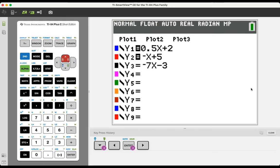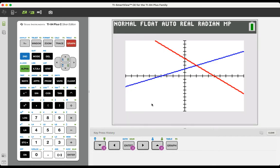Right now, when I press graph, I'm only going to graph these top two equations. So press graph, and there's my top two equations.